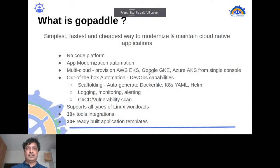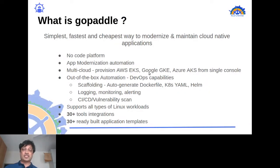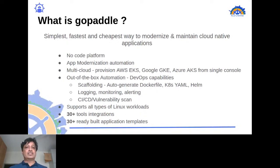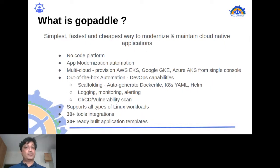This is where our platform GoPaddle comes in. It is the simplest, fastest, and cheapest way to modernize and maintain cloud-native applications. It's a no-code platform that handles automation and modernization effectively, and it's a multi-cloud solution that provisions on AWS EKS, Google GKE, or Azure AKS from a single console.